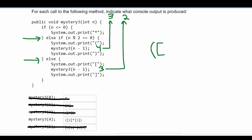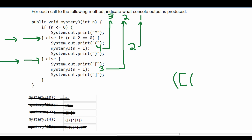Now we have two in our method. We're in the else-if statement since modulus of two equals zero, so we have a parenthesis and then two minus one which is one. One is passed back up, goes into the else statement again, giving us another bracket. One minus one is zero, which goes to the top and hits our base case. Once we're at our base case we can start unwinding, and we have our star.